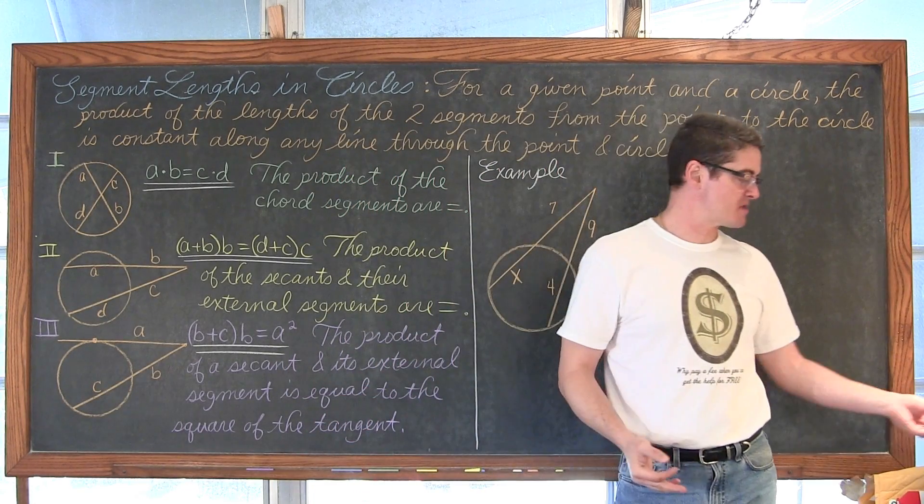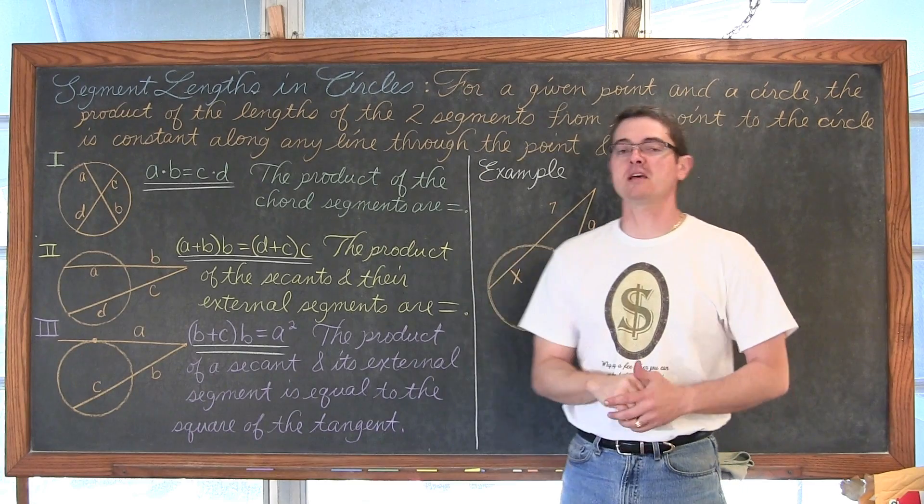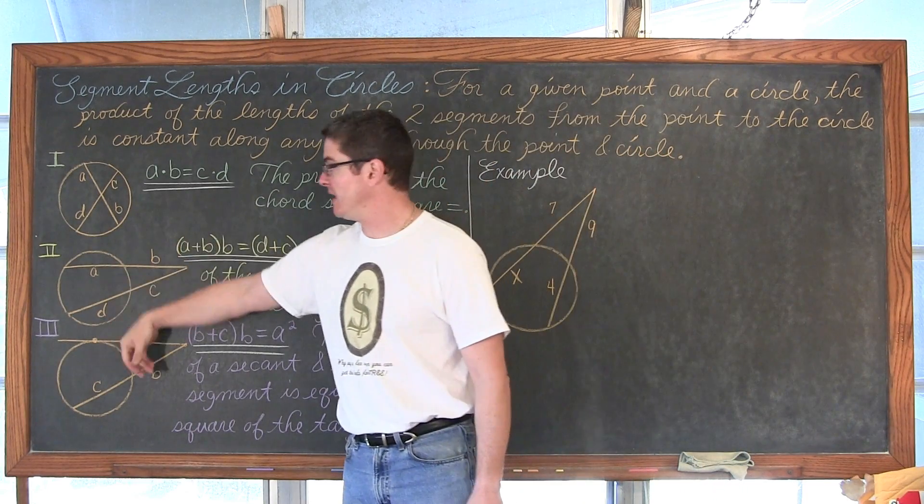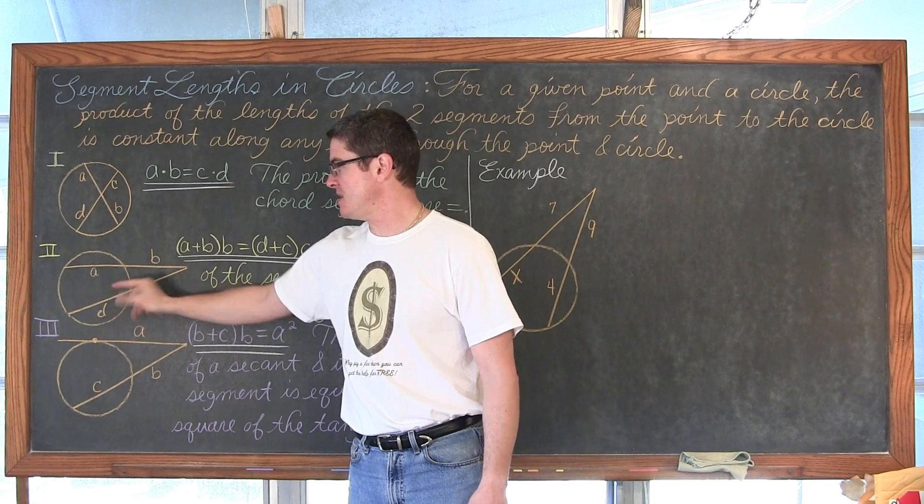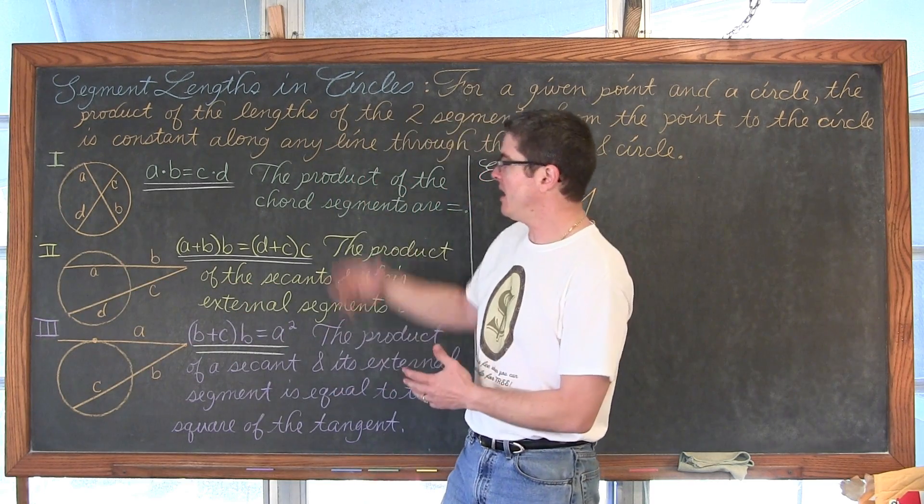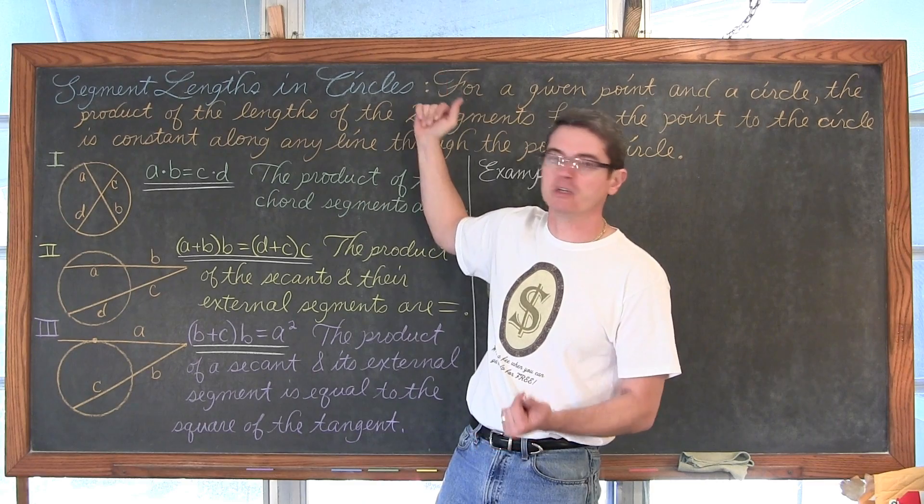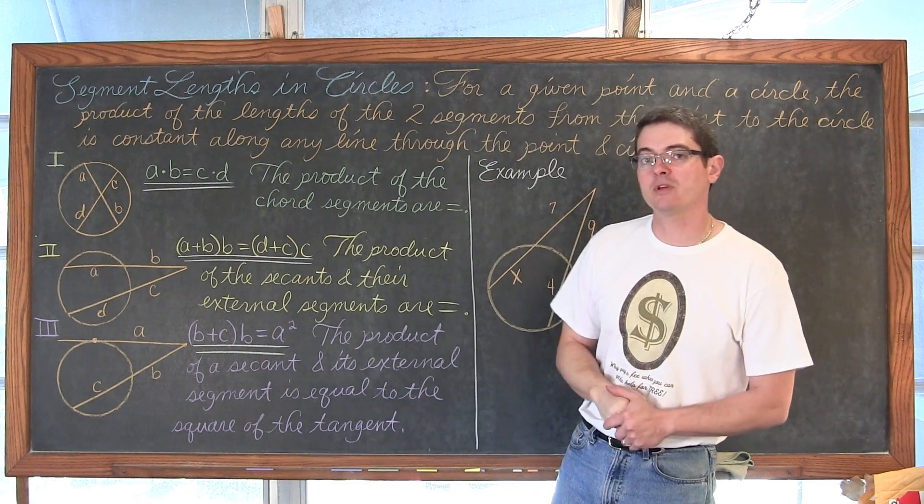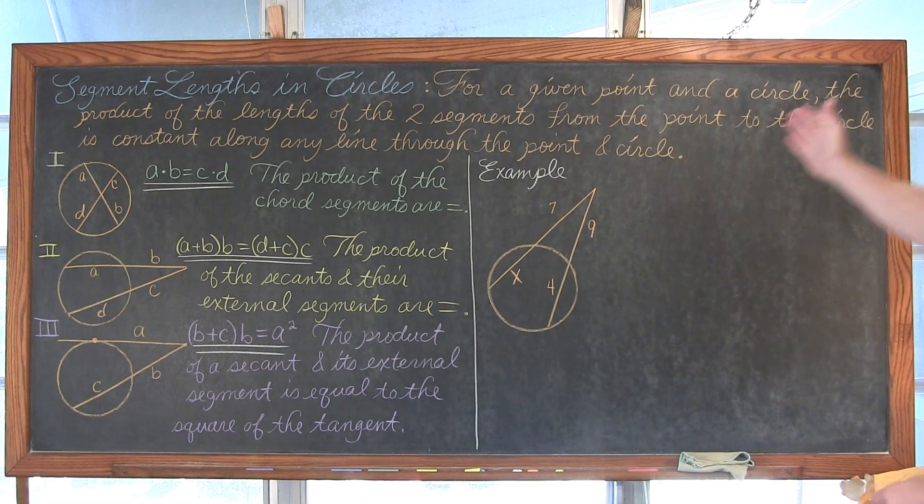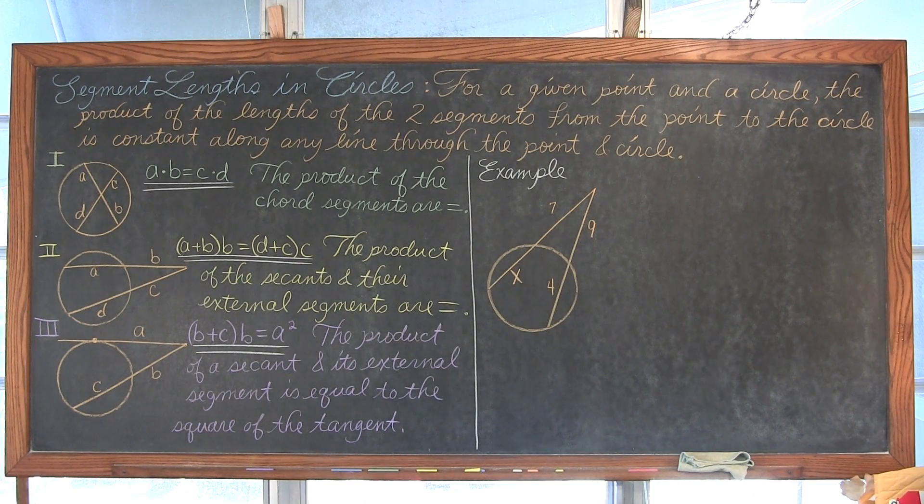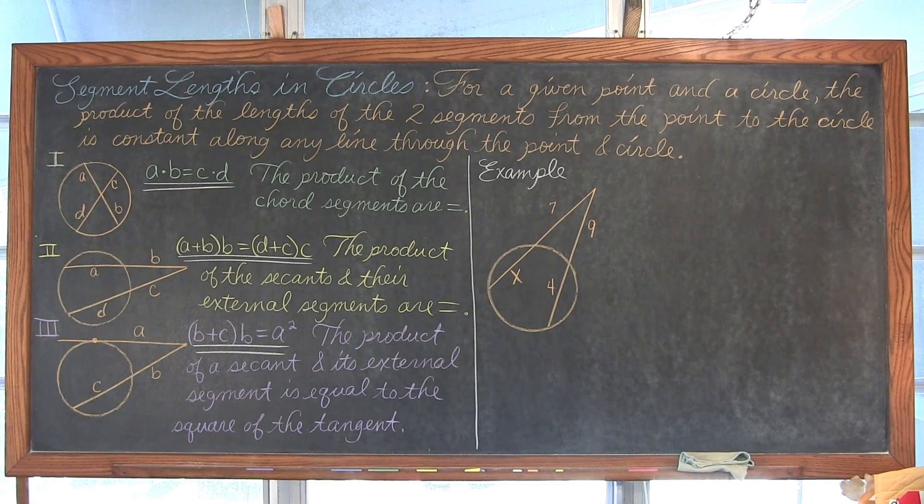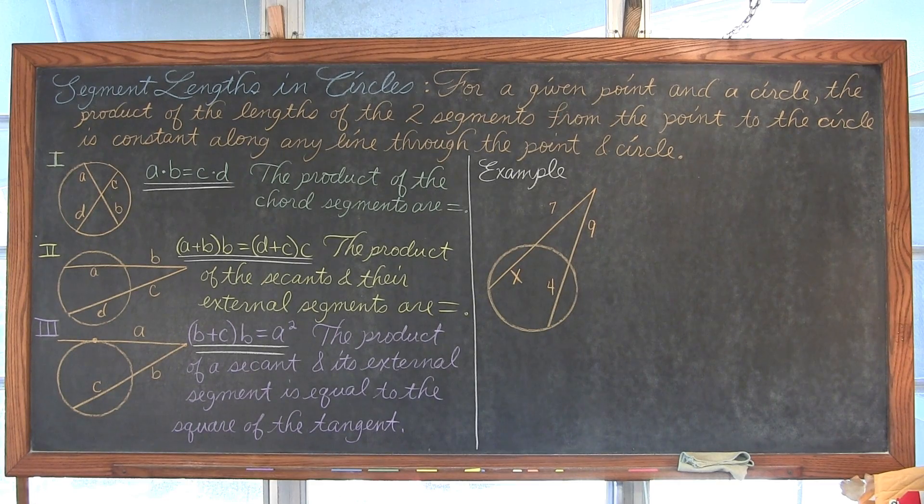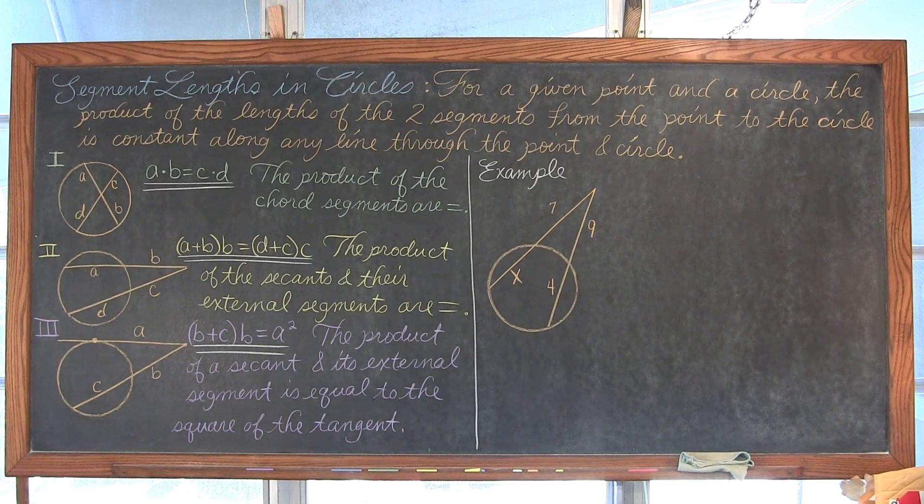In this video I want to work through three examples and explain how to work with and find segment lengths in circles when these circles are being intersected by chords, secants, or tangents. I wrote my basic concept across the board so that I can lead these three formulas as I go through my three examples to help you understand.